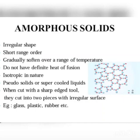Amorphous solids have irregular shape and short range order. They gradually soften over a range of temperature and do not have a definite heat of fusion. They are isotropic in nature and are known as pseudo solids or supercooled liquids. When cut with a sharp edged tool, they cut into two pieces with an irregular surface.